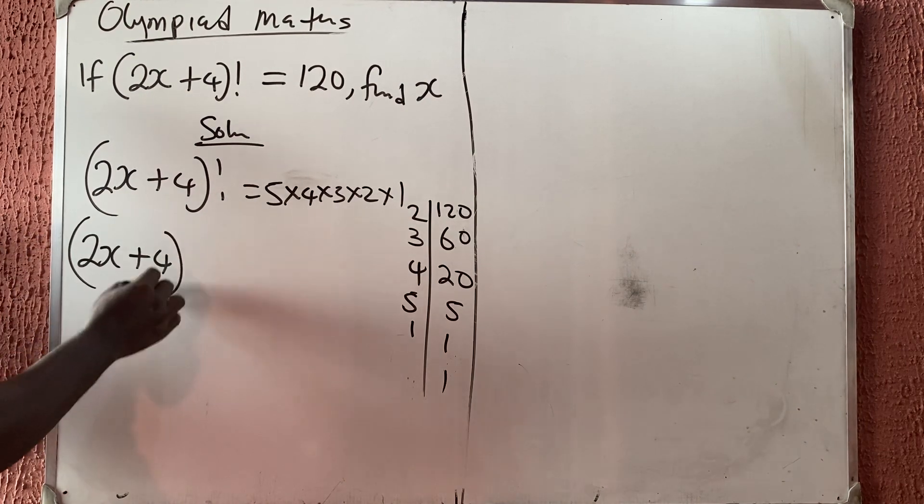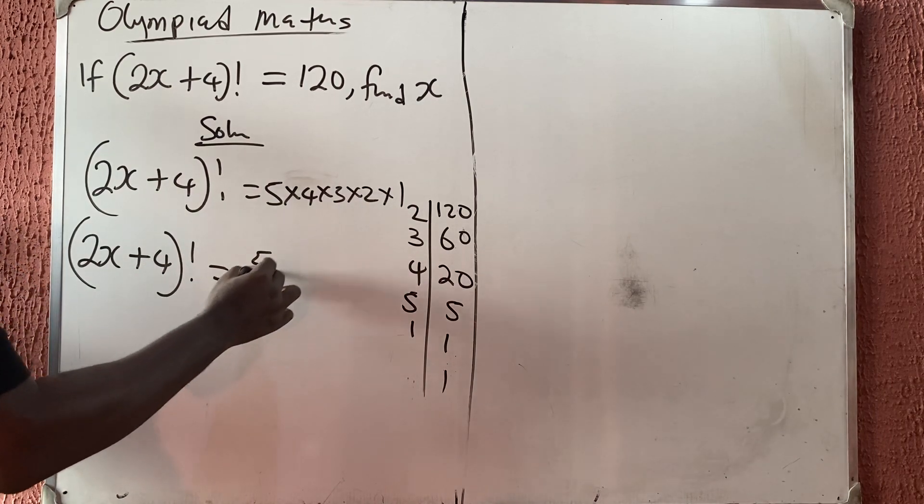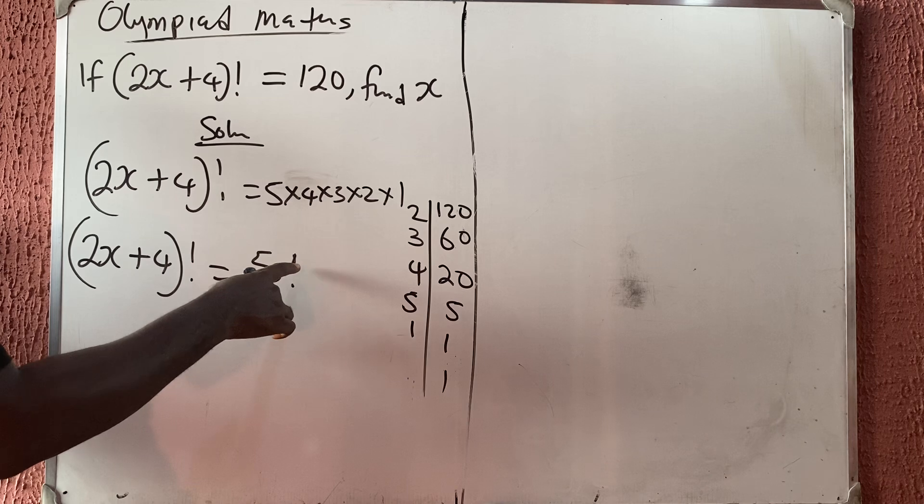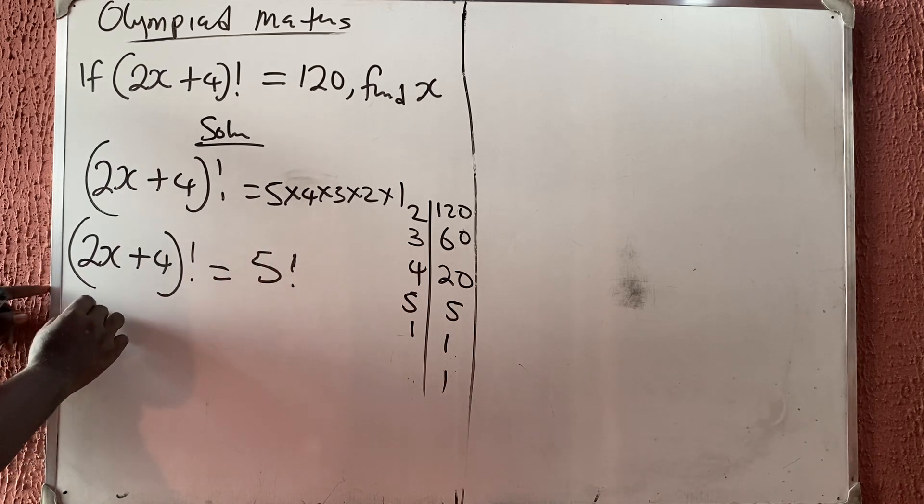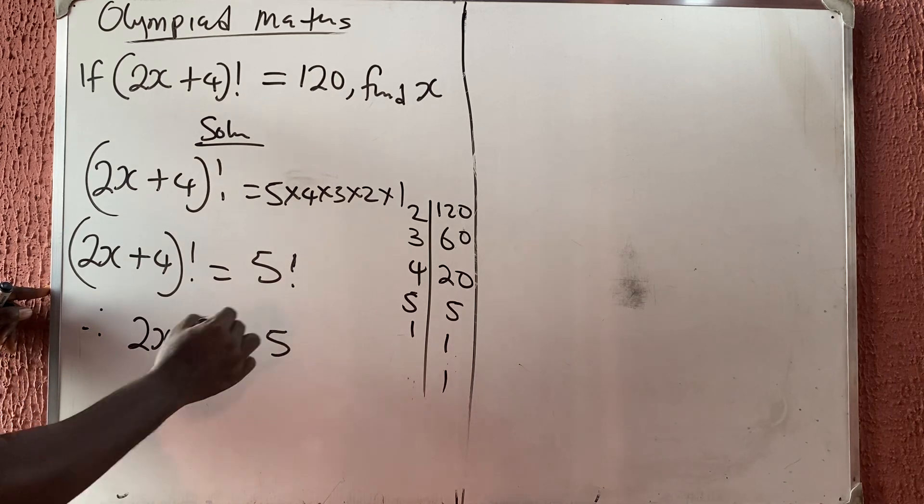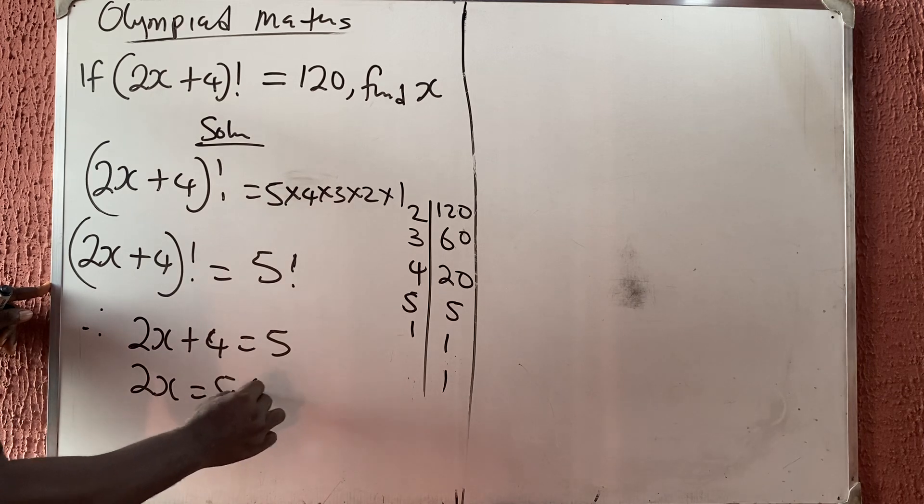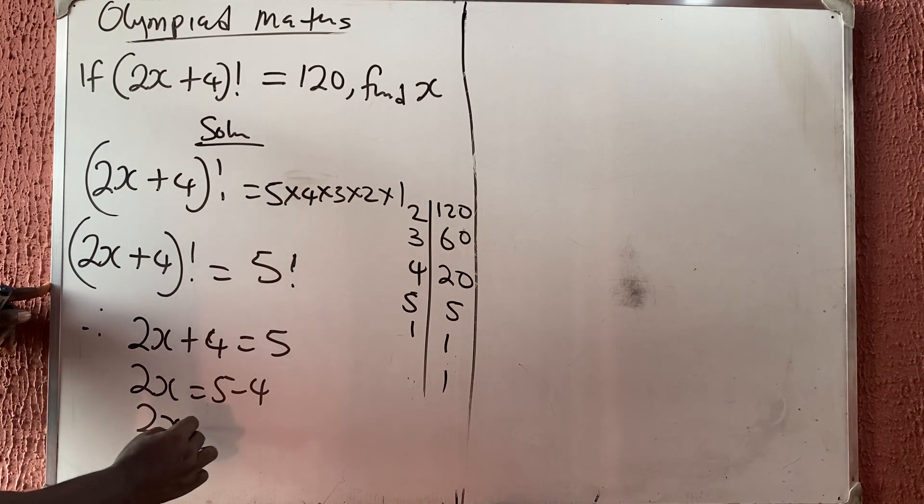So this is what 2x plus 4 all brackets factorial is equal to. All these things is saying 5 factorial. If factorial can take care of factorial, so this implies that 2x plus 4 is equal to 5.